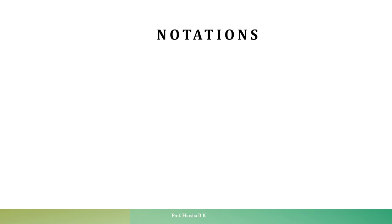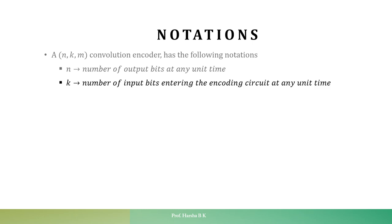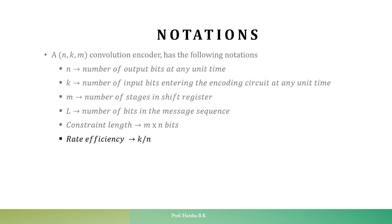Before we proceed, let us understand the notations used when solving a convolutional encoder. The encoder is denoted by (N, K, M), where N is the number of output bits at any unit time, K is the number of input bits entering the encoding circuit at any unit time, and M is the number of stages in the shift register. L is the constraint length which is M times N bits. The rate efficiency is given by K/N, and the length of the encoded sequence equals N times (L plus M).